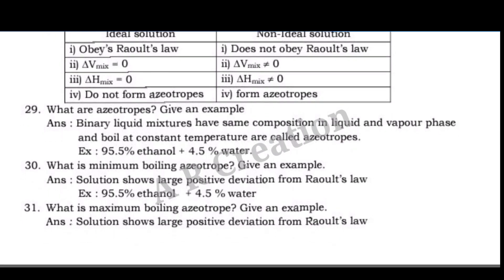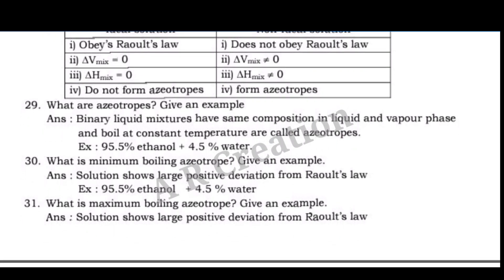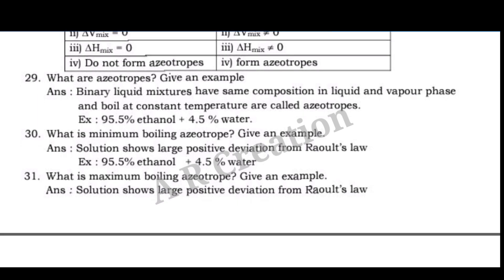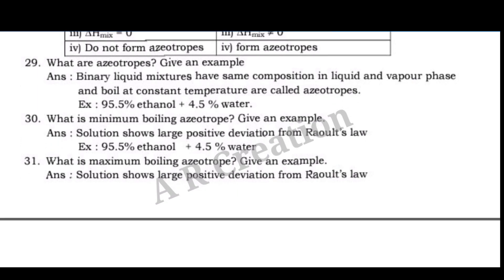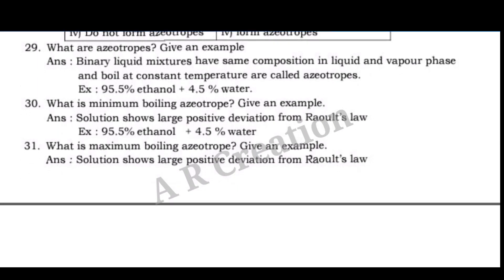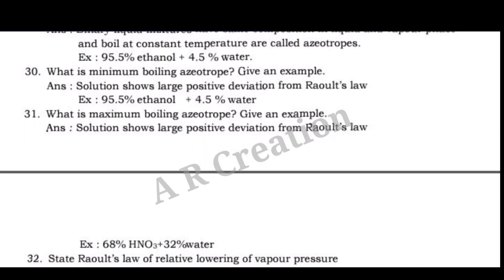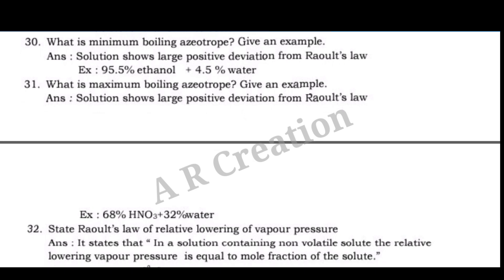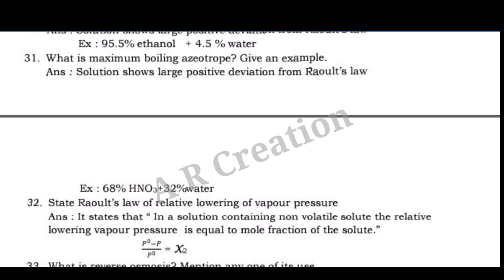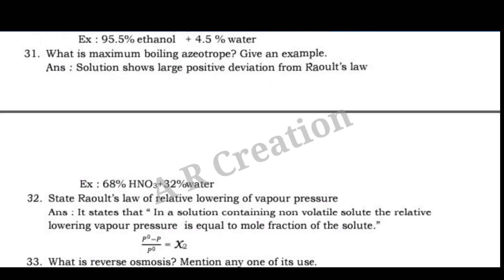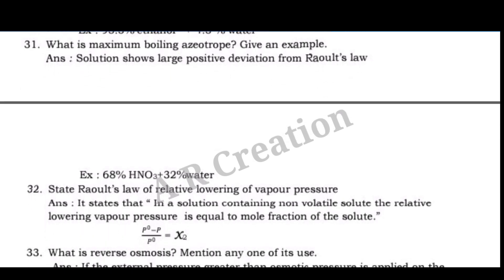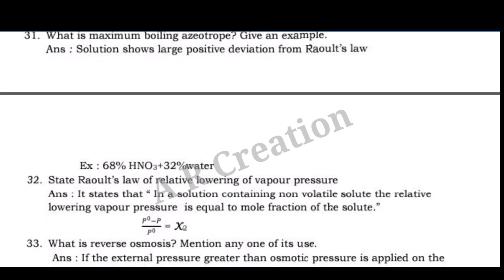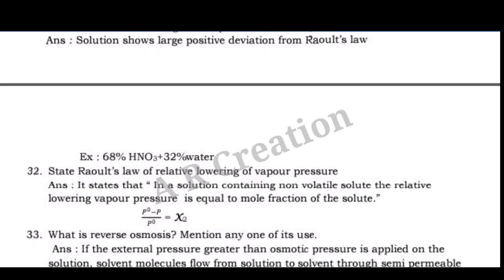Question 31: What is a maximum boiling azeotrope? Give an example. Answer: A solution that shows large negative deviation from Raoult's law forms a maximum boiling azeotrope. Question 32: State Raoult's law of relative lowering of vapor pressure. Answer: It states that in a solution containing a non-volatile solute, the relative lowering of vapor pressure is equal to the mole fraction of the solute.